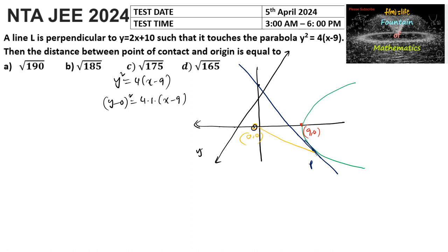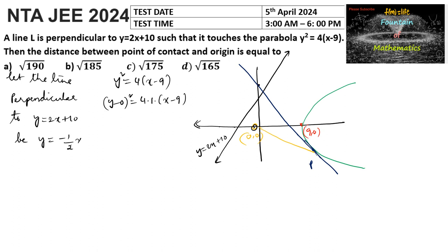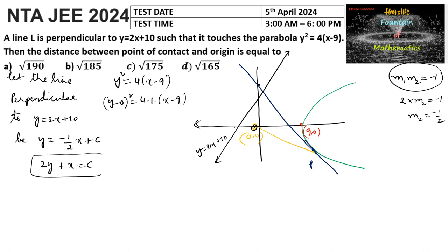Since the given line is y = 2x + 10, let the perpendicular line be y = −(1/2)x + c, because for two perpendicular lines m₁·m₂ = −1. When the slope of the first line is 2, then m₂ = −1/2. So we can write 2y + x = constant. We substitute y = −(1/2)x + c into the parabola equation, since our line is a tangent to the parabola.